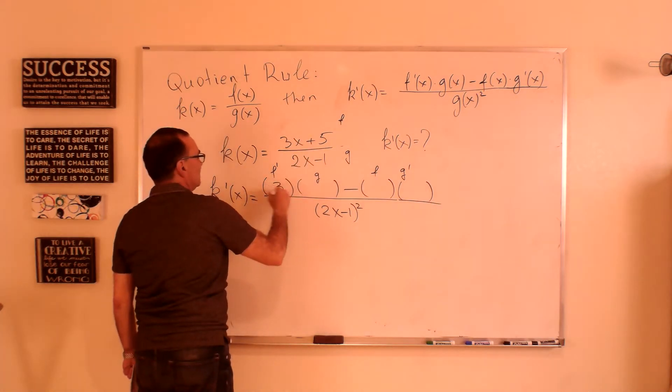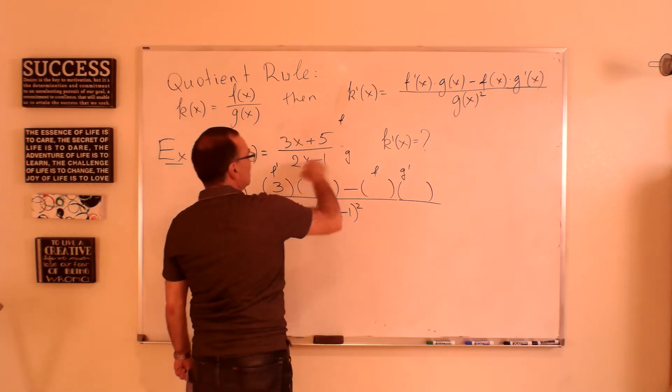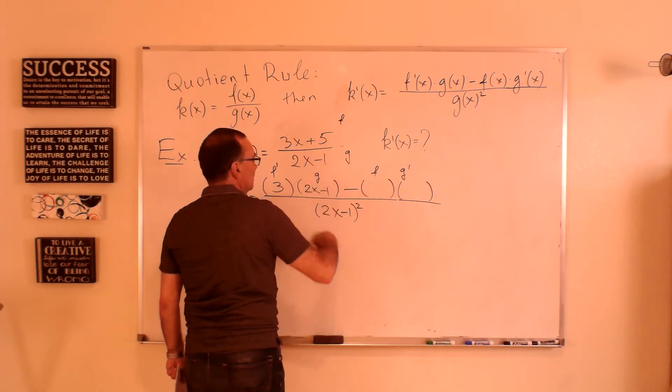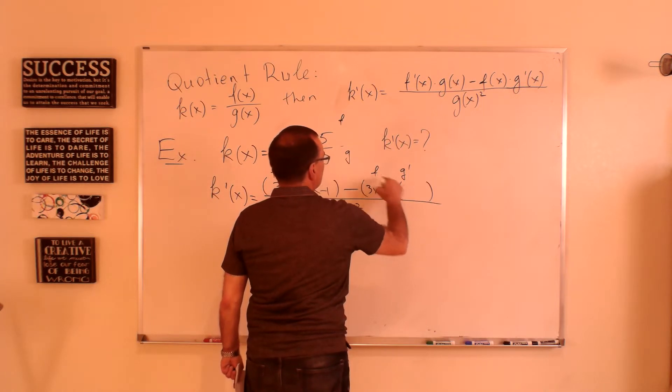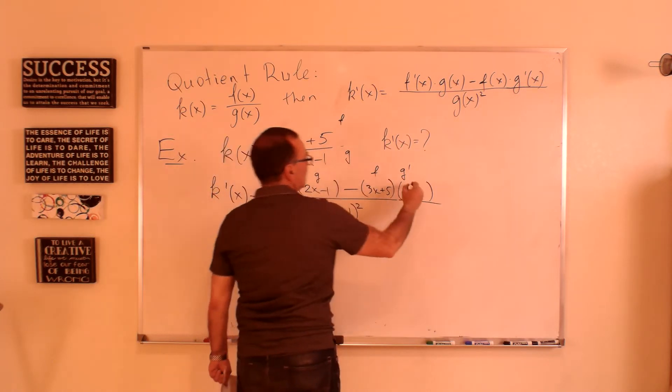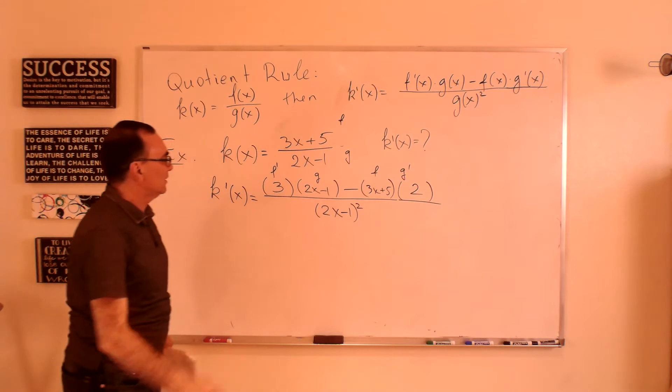So the derivative of 3x plus 5, which is 3, times g, which is 2x minus 1, minus f, which is 3x plus 5, times g', and the derivative of g is just 2. That's it.